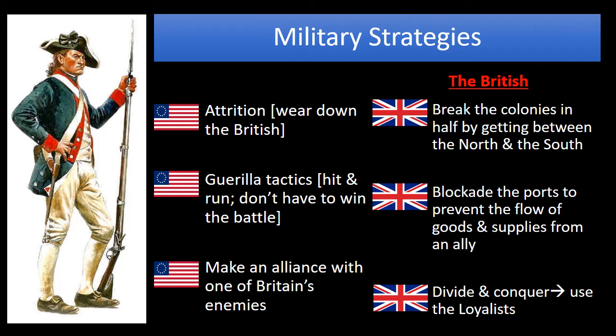The third major strategy the colonists would employ was making an alliance with one of Britain's enemies. Because Britain was the most powerful country in the world, they had a lot of enemies, and the American colonists were trying to make an alliance with one of those countries. The British strategy was breaking the colonists in half by dividing the North and the South — divide and conquer.